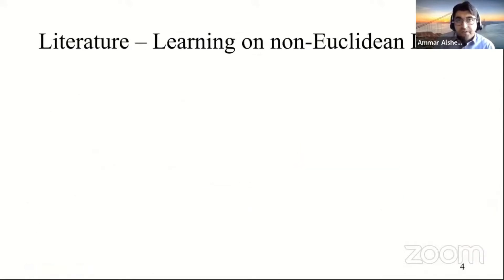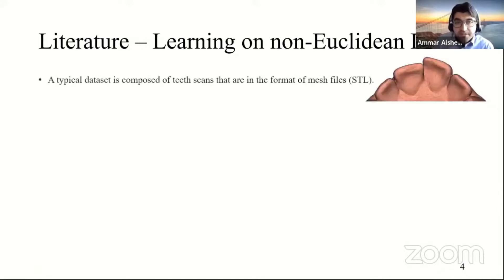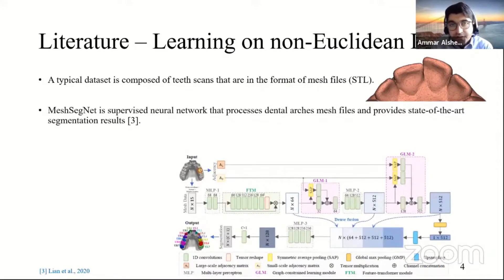In literature, teeth arches are treated as non-Euclidean data. This means that arches are not composed of regular 2D grids such as 2D images, but rather they are represented as point clouds or as 3D meshes that are composed of vertices that are connected by edges to form triangles as seen in this picture. And one of the state-of-the-art studies and models that has been published recently is MeshSegNet that treats dental arches as input and outputs a classification for every tooth on the dental arch.